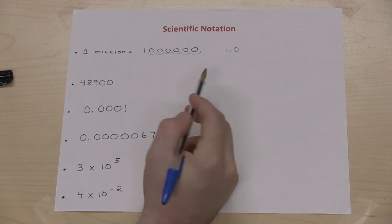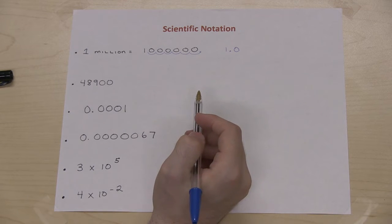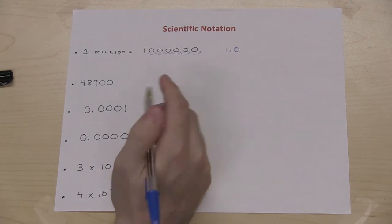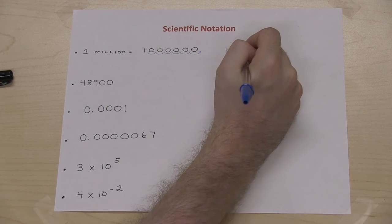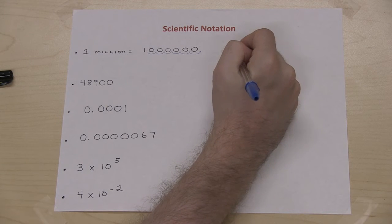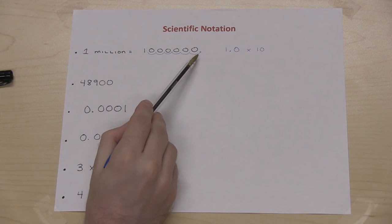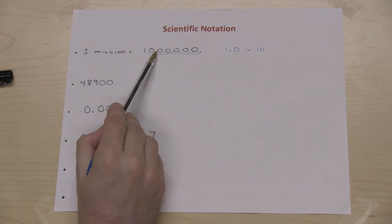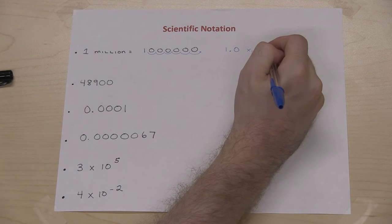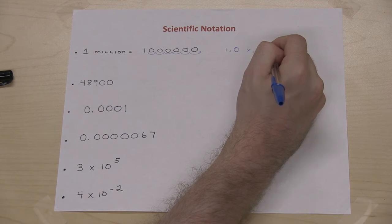Now, for scientific notation, we take that number and we write it as a product with a power of 10. So that would be 1.0 times 10. And because I moved the decimal 6 times to the left, I will write it as 1.0 times 10 to the 6.